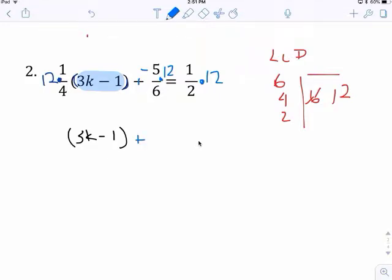Cross cancel. It goes in 3. 3 times 1 is 3. Cross cancel, 2. 2 times negative 5 is negative 10. Right here. Cross cancel. 6. 1 times 6 is 6.